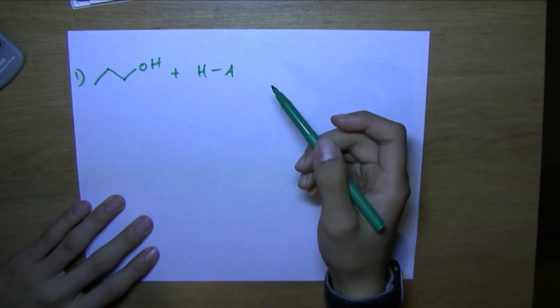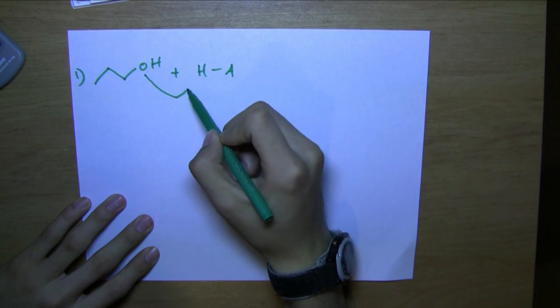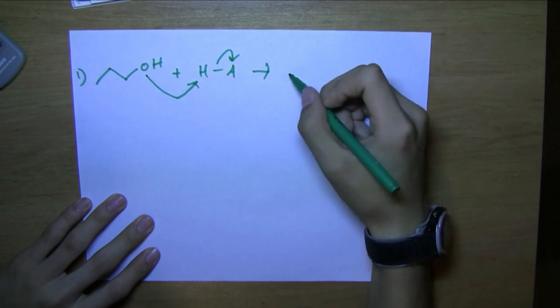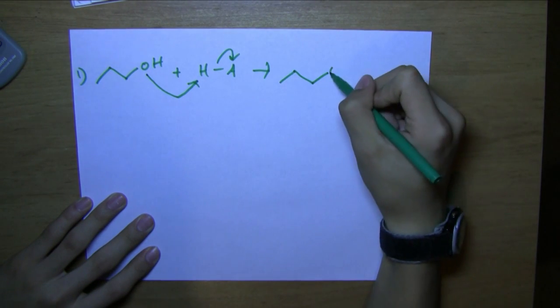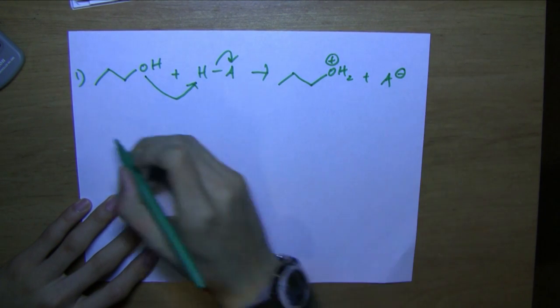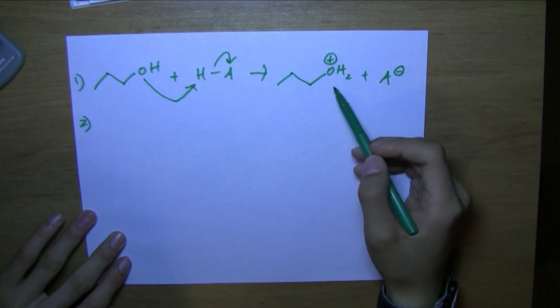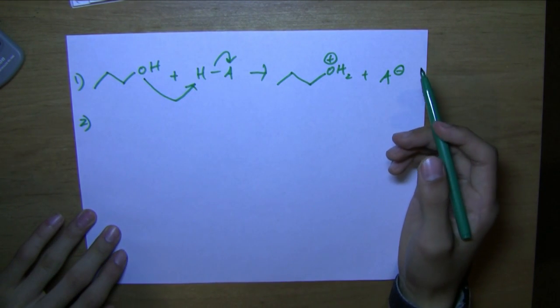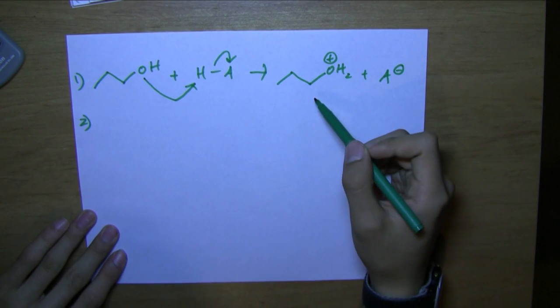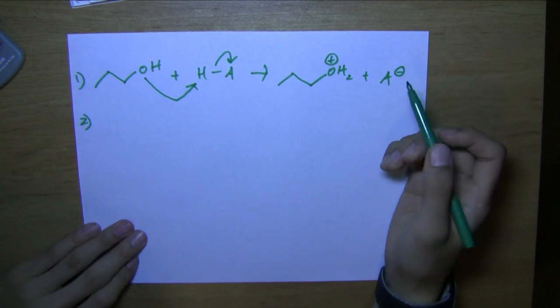The first step is the same as before, where the oxygen gives its electrons to the H, and the HA bond goes to the A. Now, this is the part where it differs, because water, although it's a good leaving group, it's not good enough where it would allow a primary carbocation, because primary carbocations are extremely unstable.